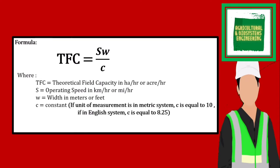If the unit of measurement is in the metric system, the value of the constant is 10, while if you use the English system, the value for the constant will be 8.25.